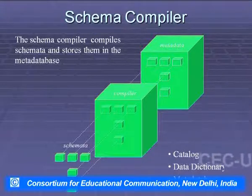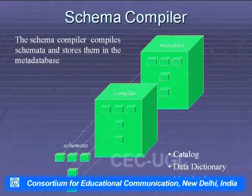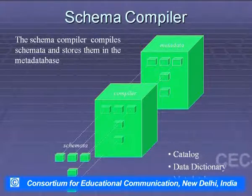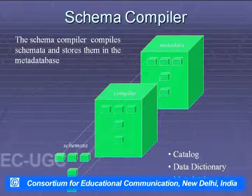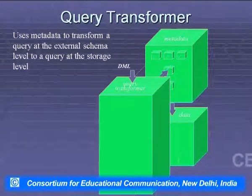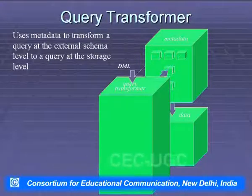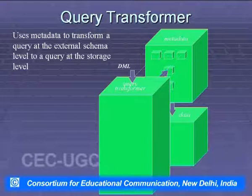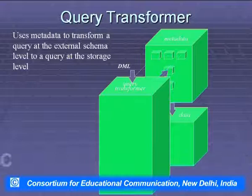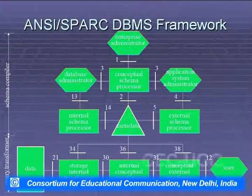The schema compiler compiles the schema and stores it in the metadata database — also called the catalog, data dictionary, or metadata database. Regarding query transfer, the Data Manipulation Language (DML) uses metadata to transform a query at the external schema level to a query at the storage level.